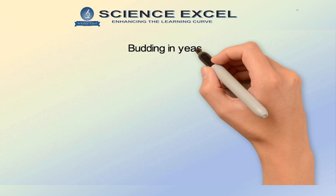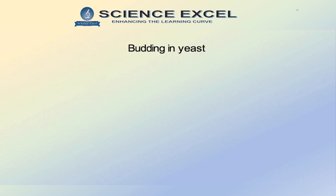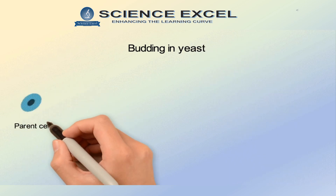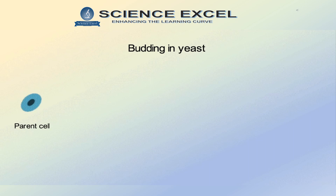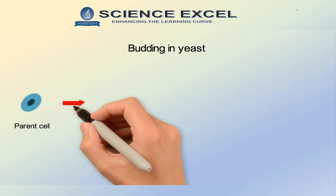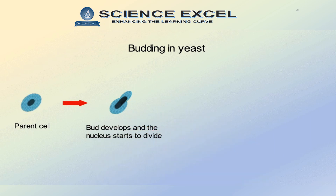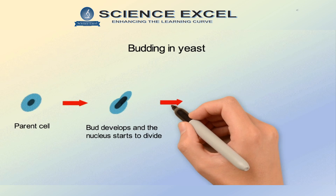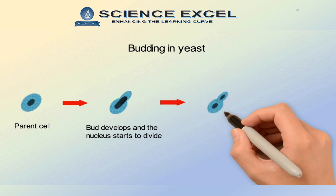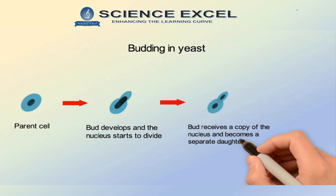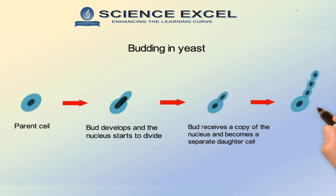Yeast is a unicellular fungus that performs budding. The parent cell produces a small outgrowth on its surface called a bud. The parent nucleus starts to divide mitotically into daughter nuclei. This daughter nuclei enters into the bud and grows into a daughter cell. Soon, a chain of such buds is formed, which upon becoming big separates from the parent cell to have an independent life as new yeast cells.